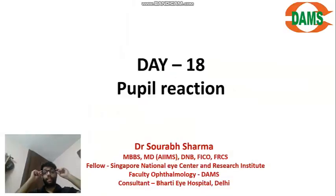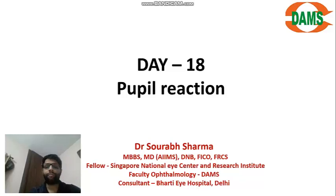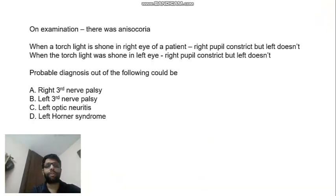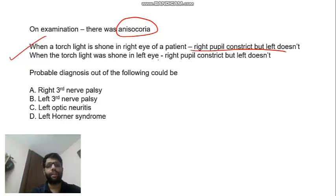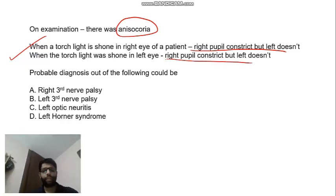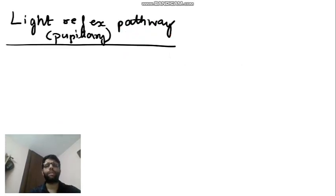Hi friends, let us see in this Day 18 some points regarding pupil reaction. Today's question was: on examination there was anisocoria — 'an-iso' means difference, 'choria' means pupil. A slide was shown: light in right eye — right constricts, left doesn't; light in left eye — right constricts, left doesn't. What is the probable diagnosis? Let us see some points regarding the pupillary pathway, then I'll tell you the correct answer.